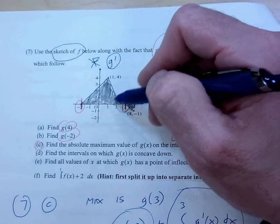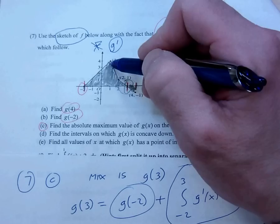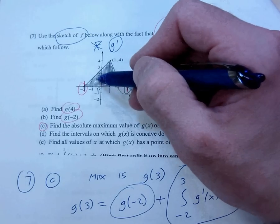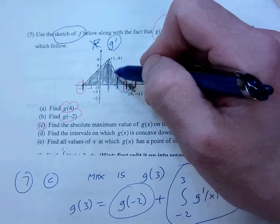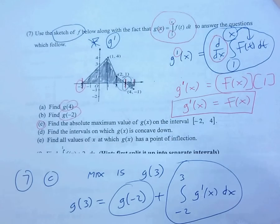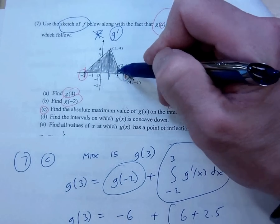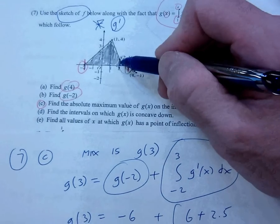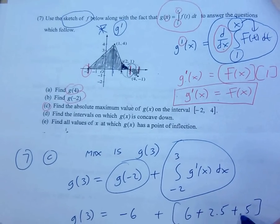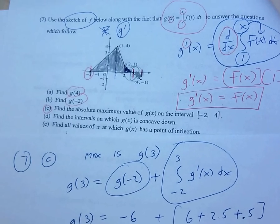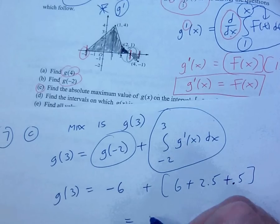What's G of negative 2? We found that earlier — it was negative 6. Now this is simply the area between G prime and the x-axis from negative 2 to 3. From negative 2 to 3, the total area is: plus 6, plus 2.5, plus this little area of 0.5. So G of negative 2 plus that integral equals negative 6 plus 9, which is 3.